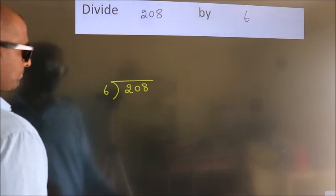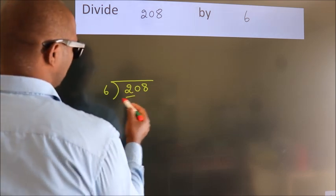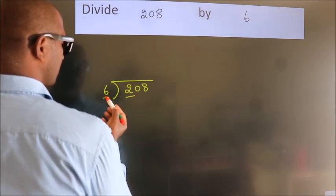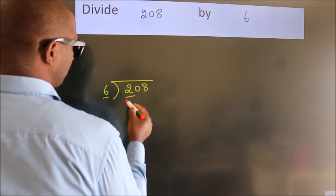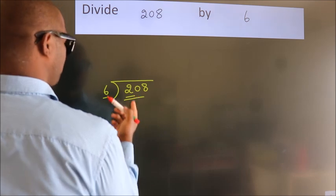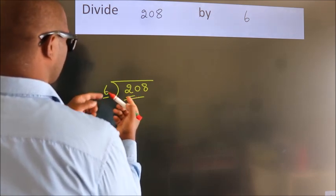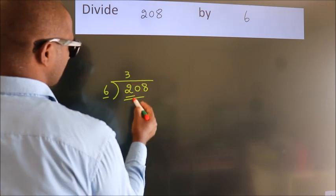Next, here we have 2, here 6. 2 is smaller than 6, so we should take 2 numbers: 20. A number close to 20 in the 6 table is 6 times 3 equals 18.